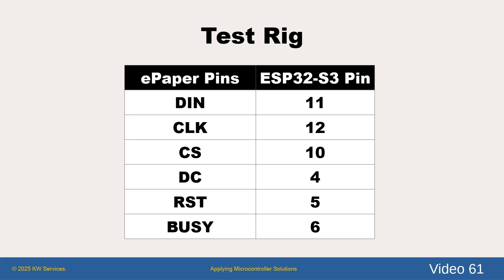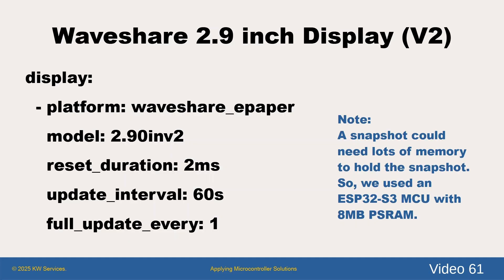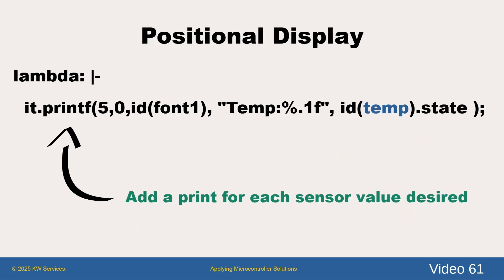The connected power leads to 3.3 volts and ground of the ESP32-S3 device. After reading messages from the community forum, we found a proper display setting for the 2.9-inch display, which is a reset duration of 2 milliseconds and the update interval initially at 60 seconds. Later you can set it to any value like 5 minutes or an hour. The most important setting is to do a full update every time, which uses the value of 1.